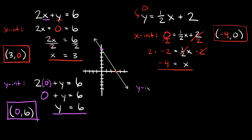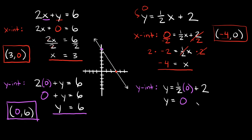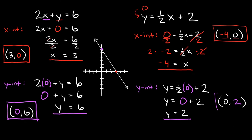Now let's find the y-intercept. To find the y-intercept, plug in 0 for x. Rewriting: y equals one-half times 0 plus 2. Simplifying: one-half times 0 is 0, so 0 plus 2 equals 2, meaning y equals 2. So our y-intercept is at the point 0 comma 2.